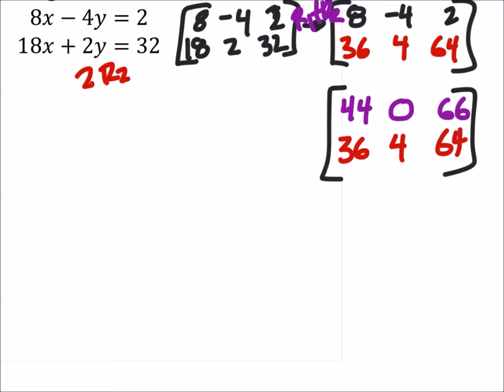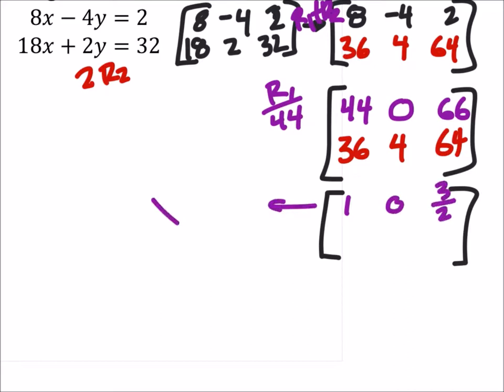Now if this was an equation, I would just take row 1 and divide it by 44, which would give me a new row 1. And that would be 1, 0, and 3 halves, which tells me right now that x is 3 halves.